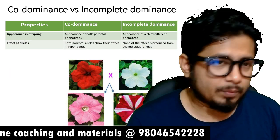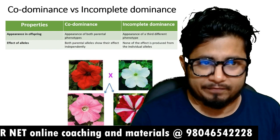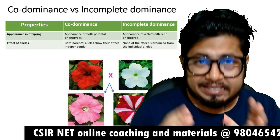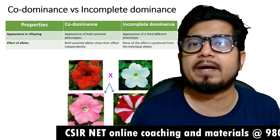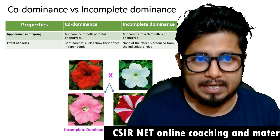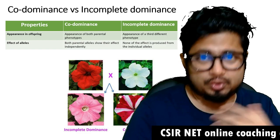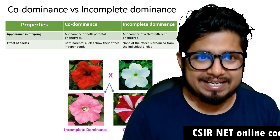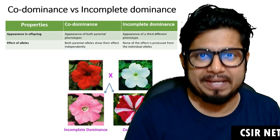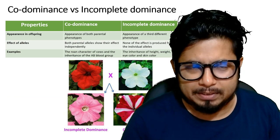Effects of alleles: what are the effects of different alleles? Both parental alleles show their effect independently in co-dominance. While in incomplete dominance, none of the individual parental alleles show themselves. Instead, they are showing something of a blend — a pink — which is a blend of red and white.